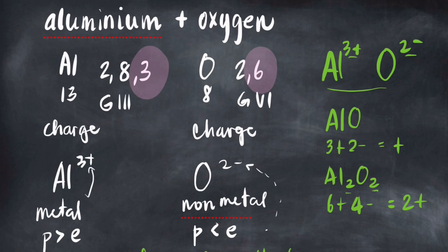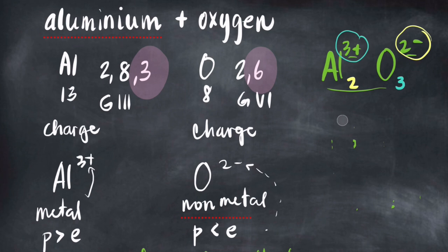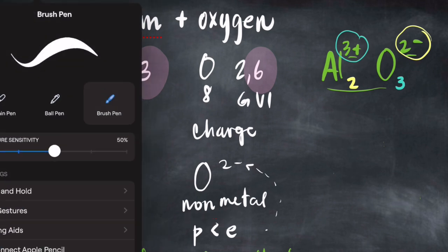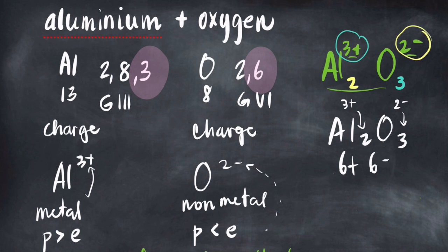The easiest tip is to swap the charge numbers: if aluminum's charge is 3, that means you need three oxygens; if oxygen's charge is 2, that means you need two aluminums. So let's check Al₂O₃: 3+ times 2 equals 6+, and 2− times 3 equals 6−, which equals zero. That confirms the formula is Al₂O₃.